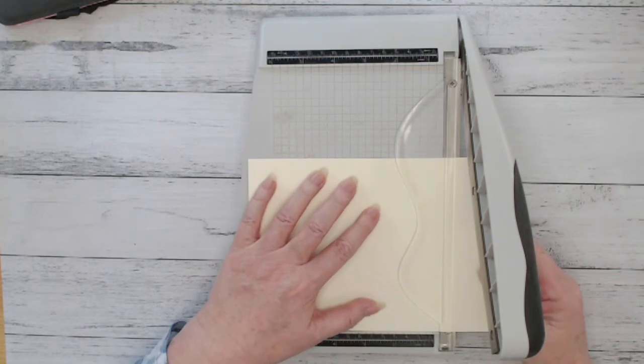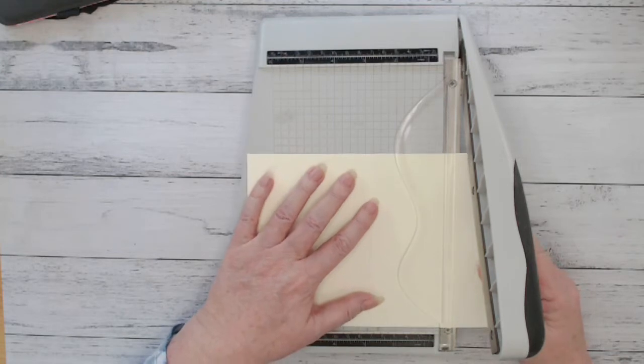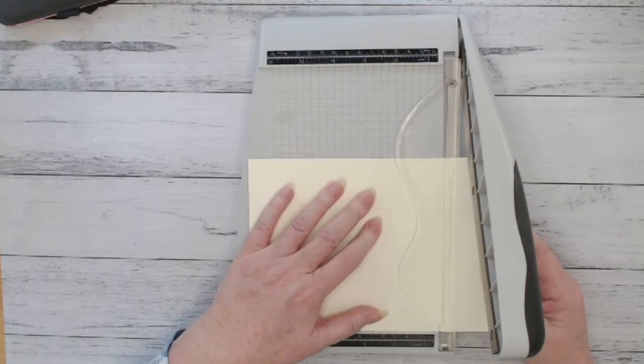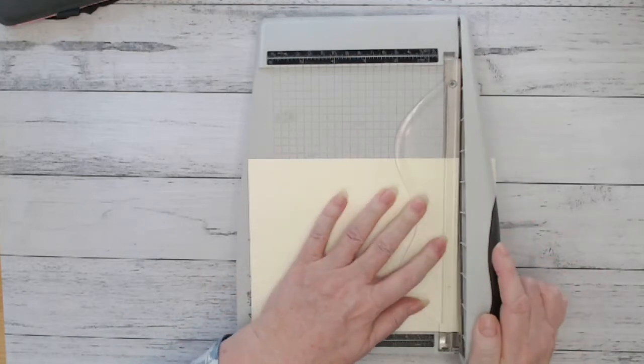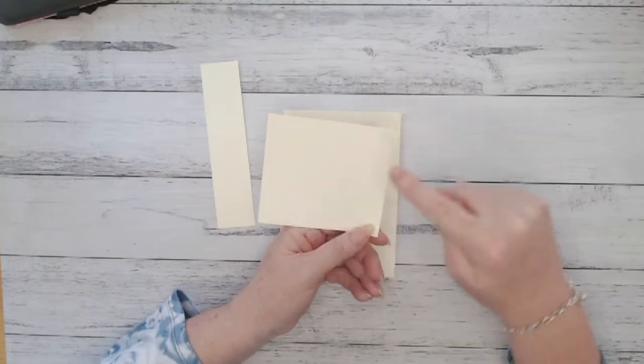I'm actually cutting a piece off the front of this card. I'm going to leave seven centimeters. I'm just lining up the fold line of my card along the seven centimeter line on my cutter there and trimming off that edge piece. You can use that piece on another project.